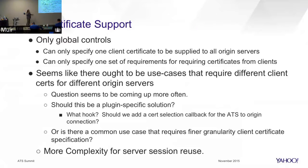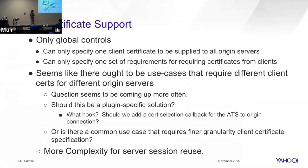Another topic that comes up periodically is client certificate support. Scott has raised it numerous times. We still only support one client cert. Periodically someone says ATS sucks because it only does one client cert. So far it hasn't been pressing enough that people are in our faces about it, so we haven't done anything yet. But eventually we probably should. The question is whether remap config override would be sufficient — since this is for connecting to the origin, we have enough time to make that decision via remap.